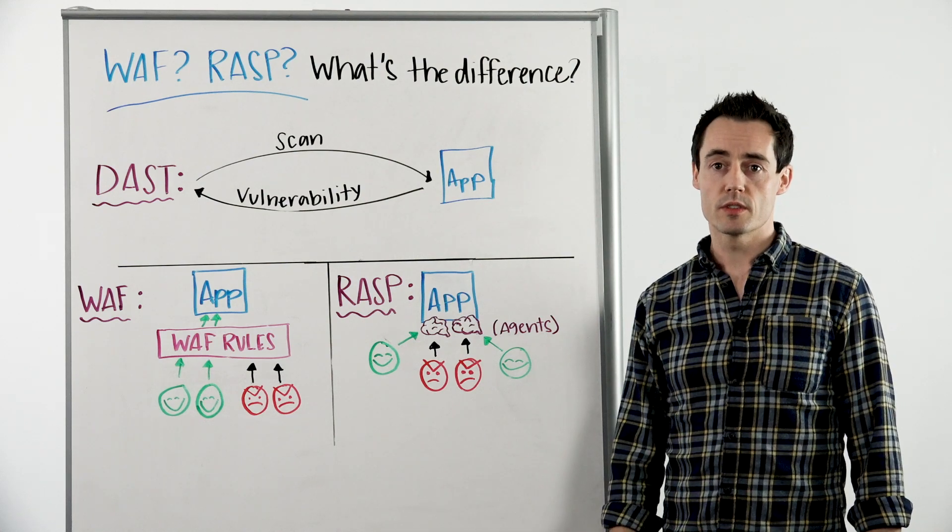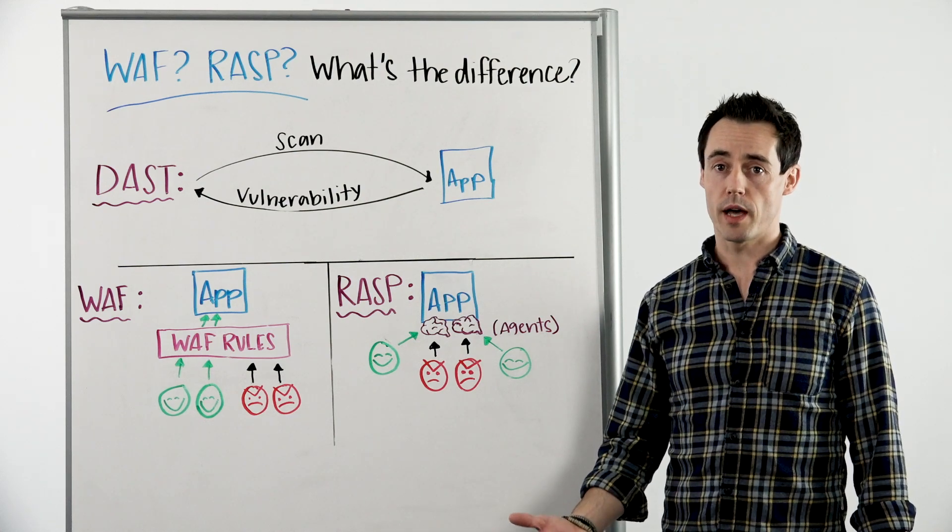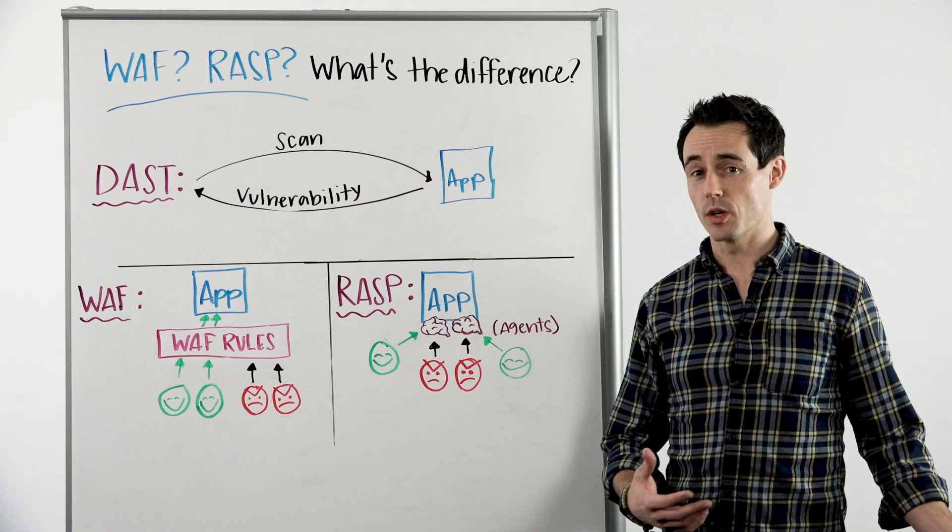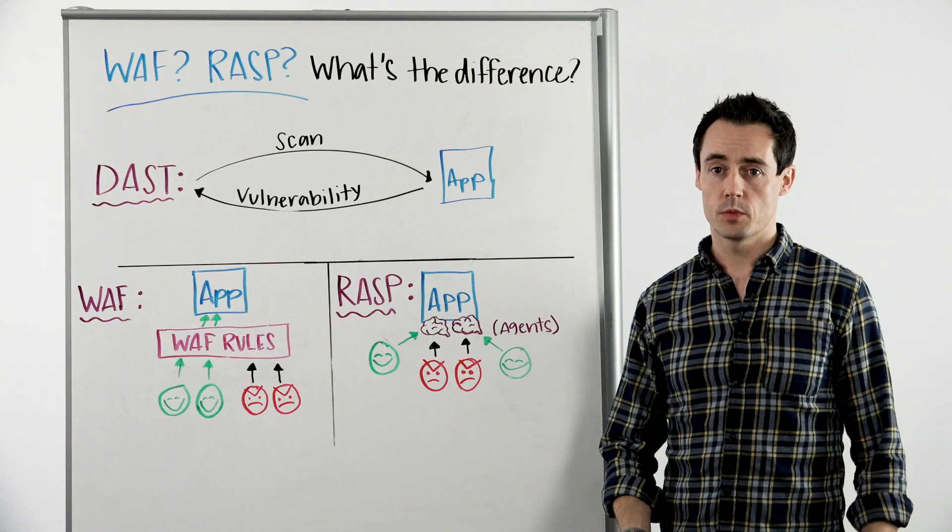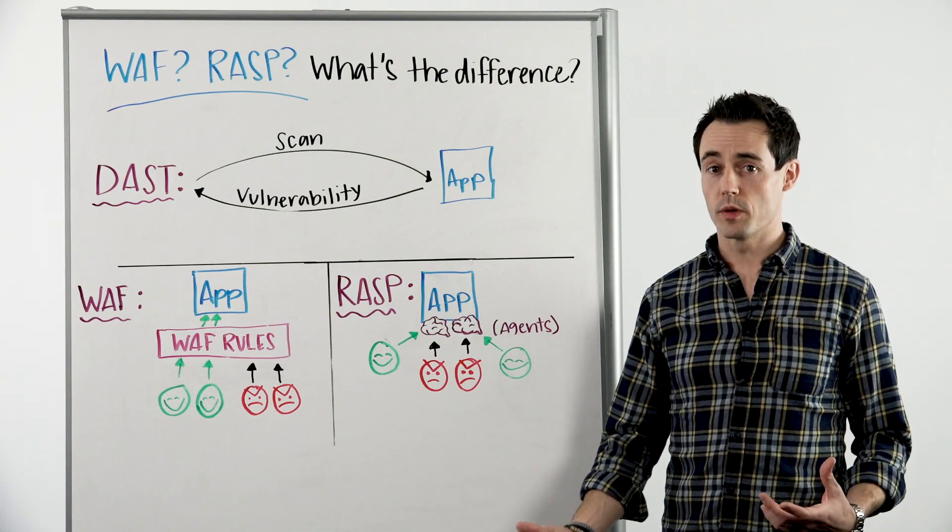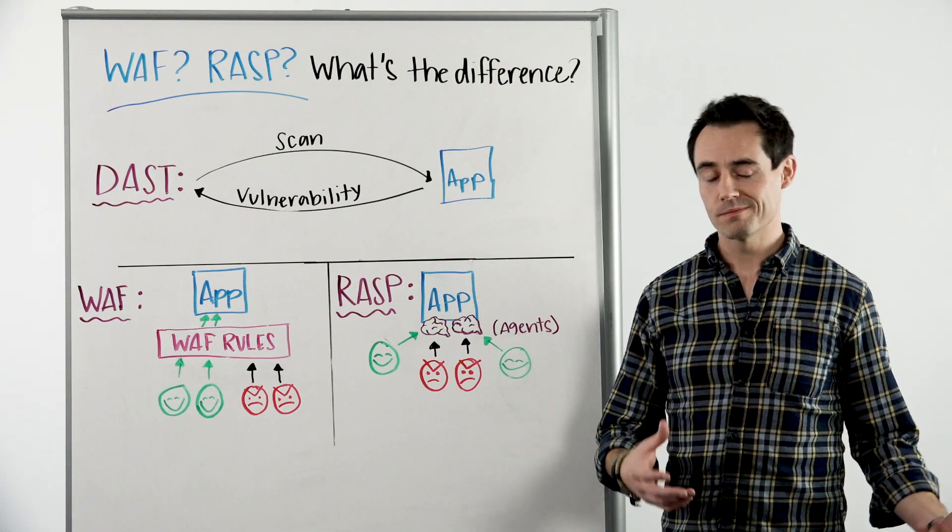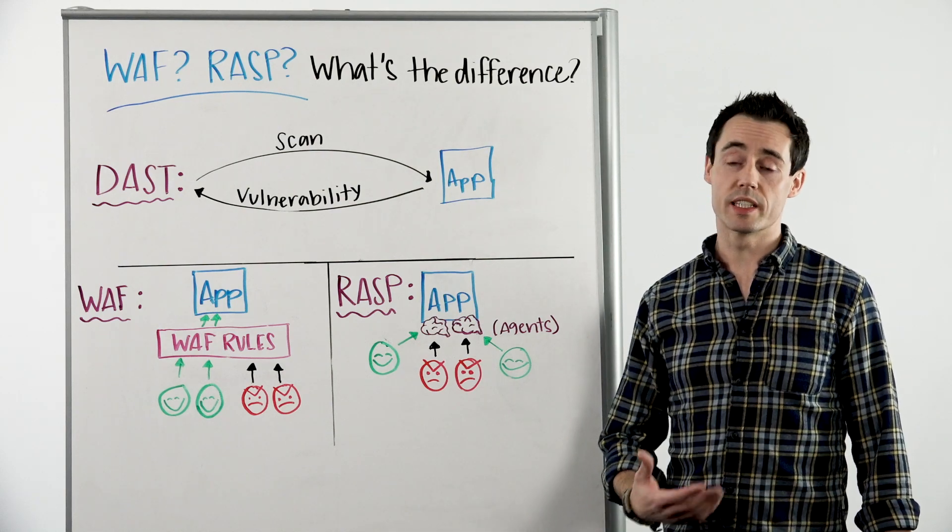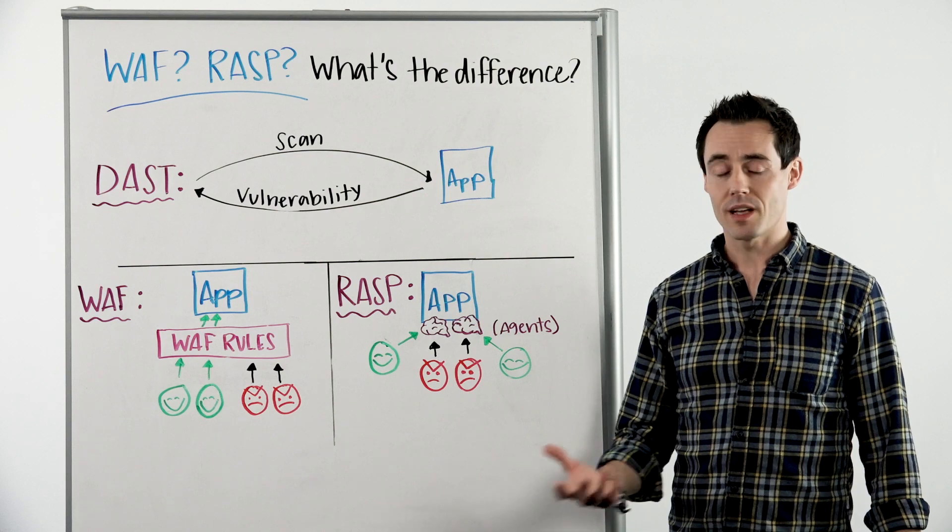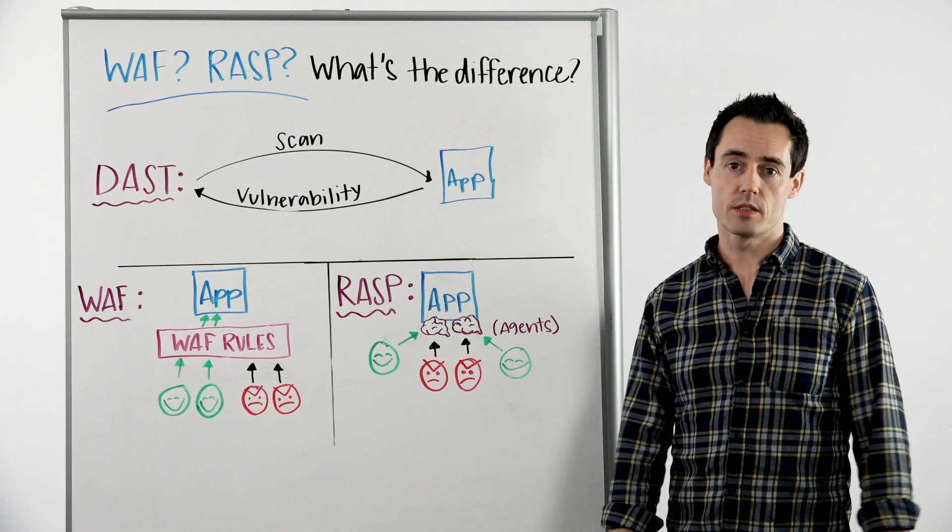The problem with static rules is that they match on very specific patterns, and if an attacker was to change their approach, the WAF wouldn't be able to block it. So what do you do? You update your rules, followed swiftly by the attacker updating their methods, and you can see where this is going. The loop only ends where one player in the game quits. Your attacker may give up, but that's not an option when you're defending your own applications.